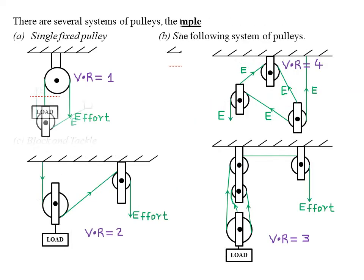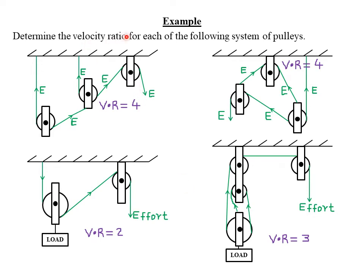We are asked to determine the velocity ratio for each of the following systems of pulleys. Just look at the last rope — which is the effort rope. When the effort is acting downwards, it does not contribute to velocity ratio, because it is acting in a direction similar to the direction of the force of gravity. Because the final effort rope is acting downwards, it will not contribute to velocity ratio. Therefore, the only ropes that contribute are the first rope, the second rope, the third rope, and the fourth rope. Velocity ratio equals 4.